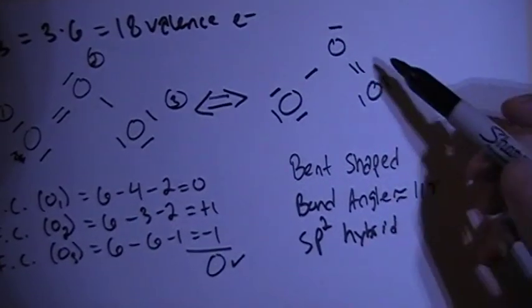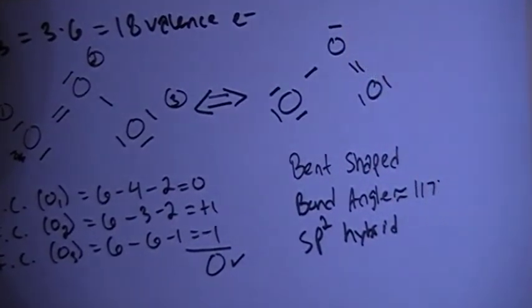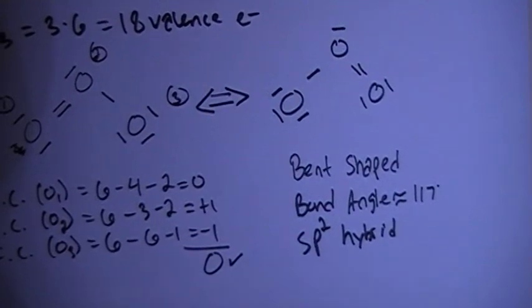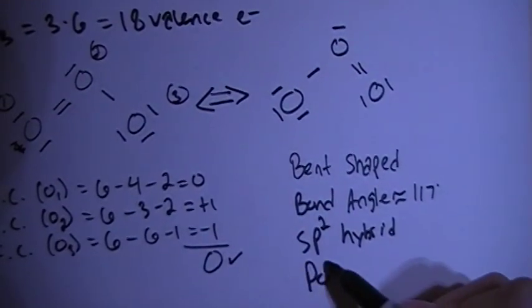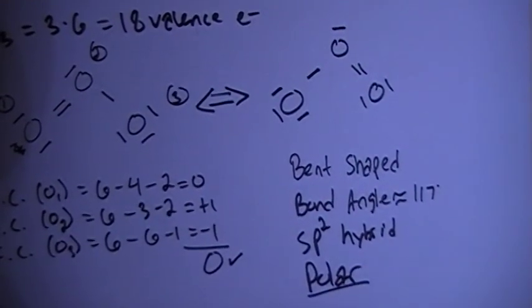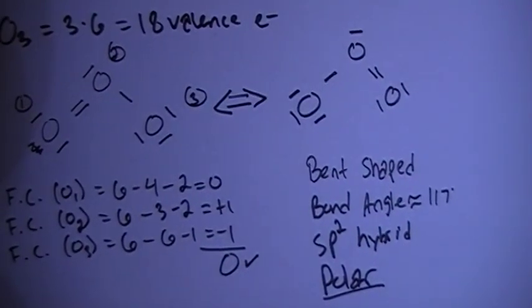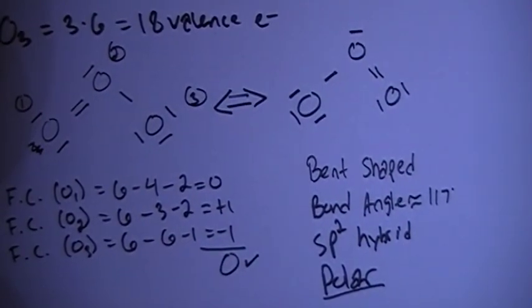And due to this non-bonding electron pair on the top of the Lewis dot structure, this is going to be a polar compound. That's pretty much it. If you have any questions, let me know. And thanks for watching.